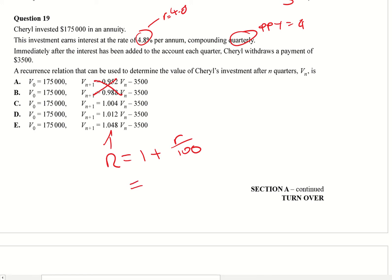So what we need to do here is we need to look at our r. We're going to go 1 plus, and our r was 4.8. But remember r is the interest per payment period, so that's going to be divided by 4, divided by 100. And that's going to give us 1.012. So that means our answer in this case is going to be D.